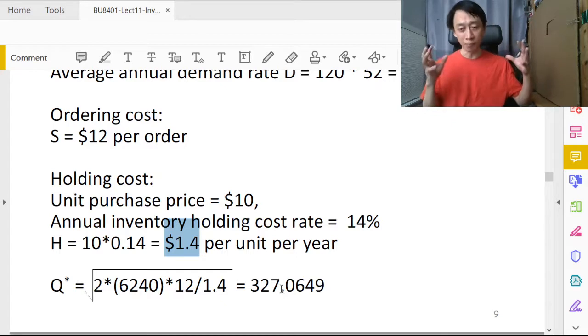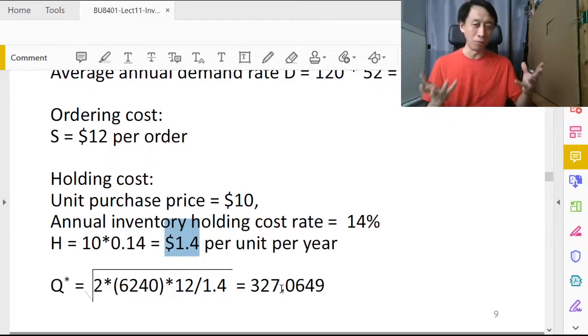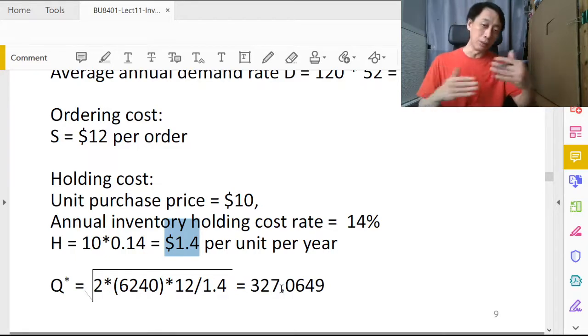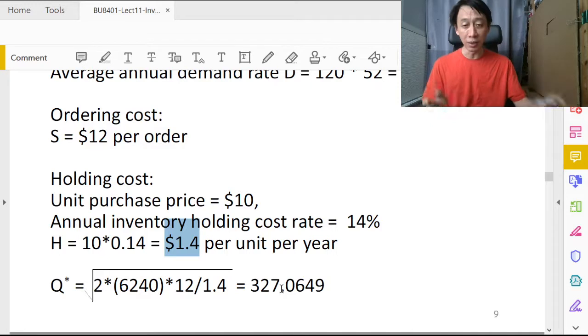So rounding to integer making any sense, then 327 units cannot be purchased, either you round up to 330 or you round down to 320. So the rounding is very dependent on commercial setup, negotiation, packaging, various things. Here for the sake of academic correctness, let's just keep the decimal places to 4dp and perform the calculations.